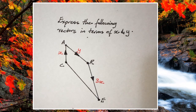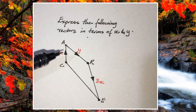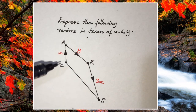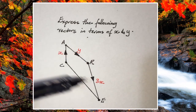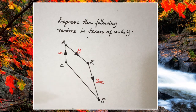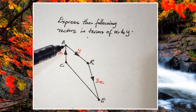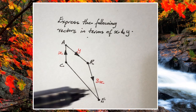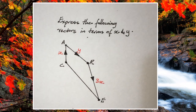Now it says express the following vectors in terms of x and y. We have a quadrilateral — C, A, R, E — that's CARE. From C to A is x, from A to R is y, and from R to E is 3x. The first thing I would do when given a diagram is identify those labeled vectors.